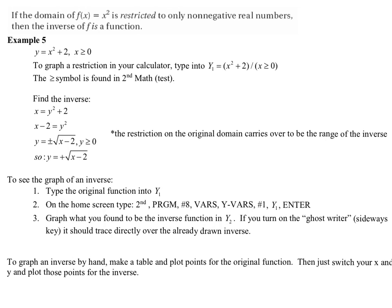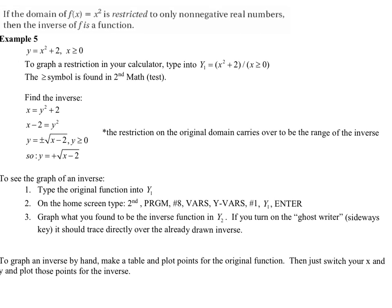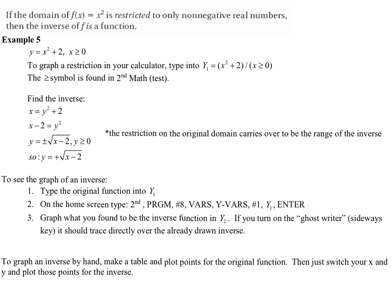And, of course, to graph by hand, which I'm going to be asking you to graph things by hand, but all you would have to do, even if it was the most crazy function in the world, is to make a table of the original, and plot points for the original, and then switch your x's and y's, and then plot those points, and then you would have a graph of your original and your inverse. Very fast, very easy.